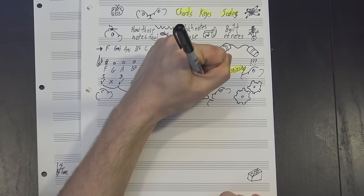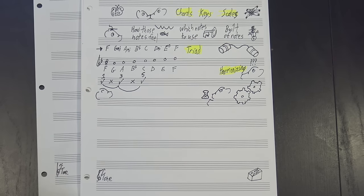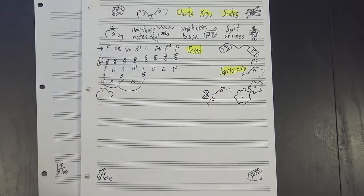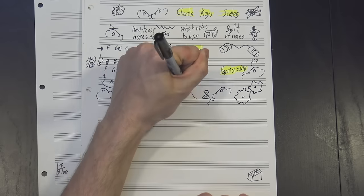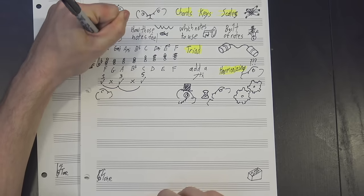If we repeat this alternating process for every possible starting note, we wind up with this - a fully harmonized major scale. And if we want to get extra fancy, we can add a seventh on top, making this.